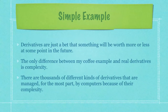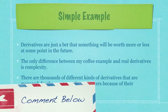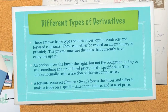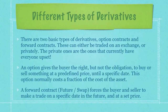Derivatives are just a bet that something will be worth more or less at some point in the future. The only difference between my coffee example and real derivatives is complexity and time limits. Options and derivatives and swaps normally have a limited time limit — in my coffee example, I said anytime in the future. There are thousands of different kinds of derivatives, managed for the most part by computers because of their overall complexity. There are basically two types of derivatives: options contracts and forward contracts.